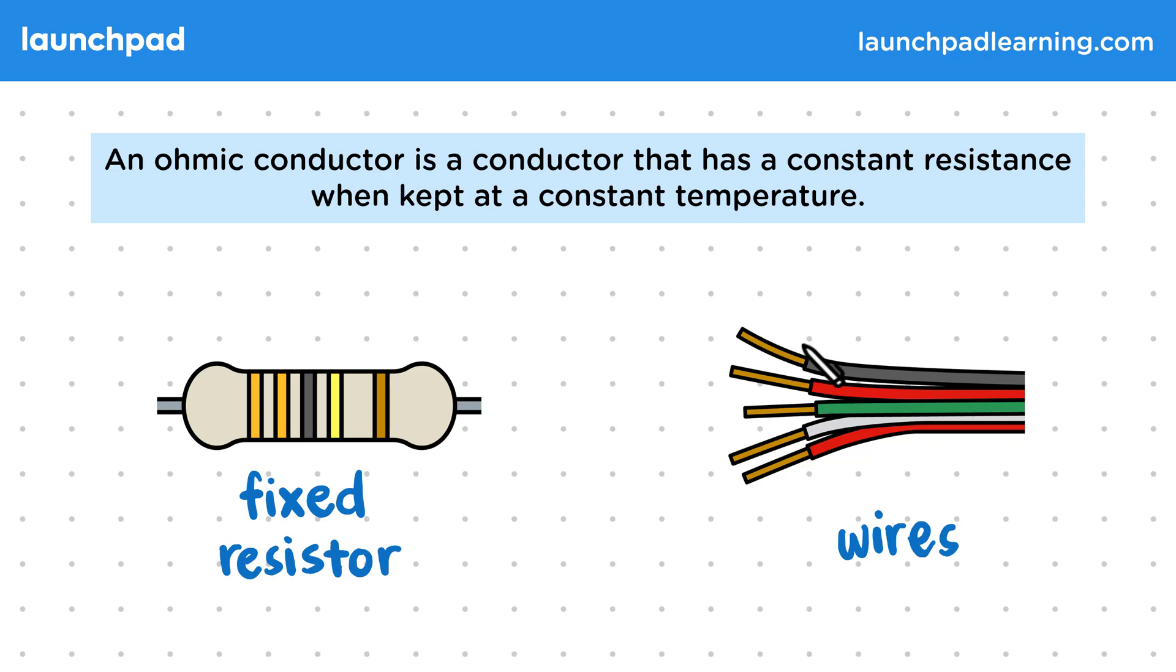Also, both these conductors can lose their ohmic properties at extreme temperatures, but you won't need to know about that at GCSE.